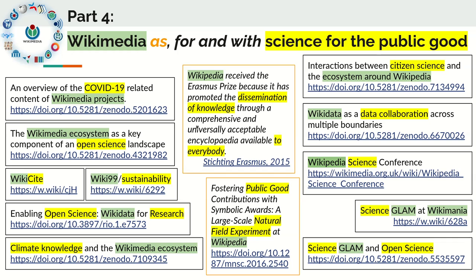Here we are looking at some examples in orange where the Wikimedia ecosystem or some part of it has been regarded as a public good — in this case it received a science prize for this reason, and in this case it served as the subject of a research experiment. The Wikimedia component is highlighted in green and the Science for the Public Good component is highlighted in yellow, and you see there are different kinds of interactions that cover all sorts of domains: from the pandemic via open science and citation networks to sustainability, climate knowledge, citizen science, data collaborations, and also the cultural sector via galleries, libraries, archives, and museums.